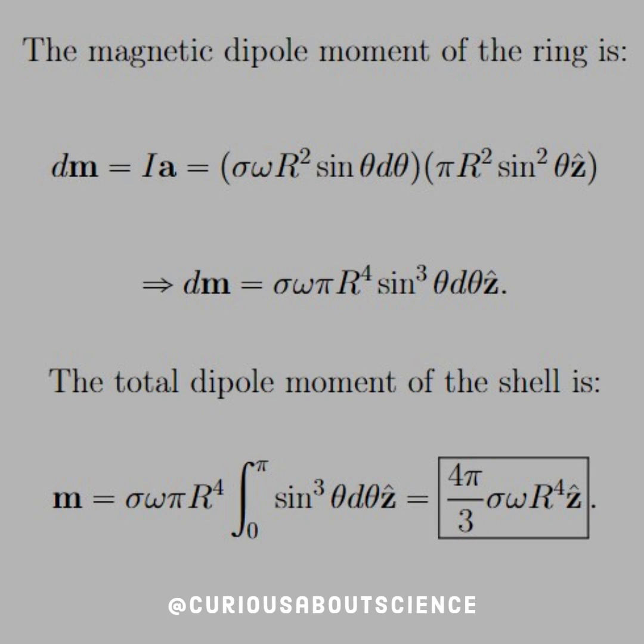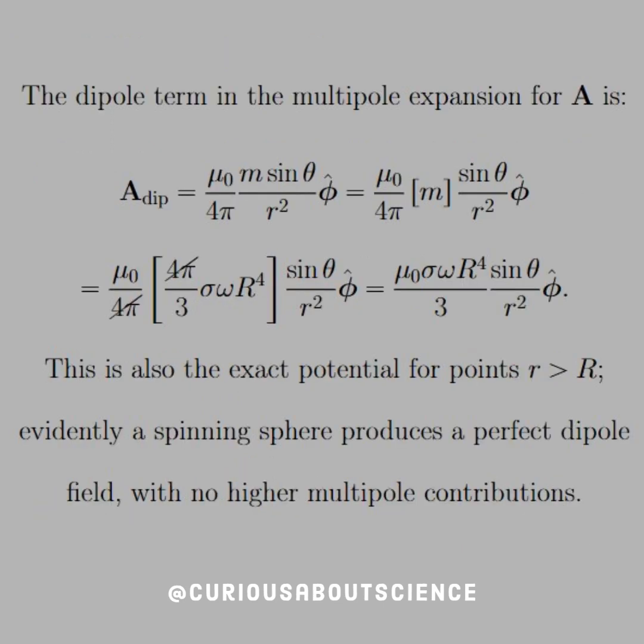So, integrate that out to find the total dipole moment of the shell, and we see that the integral from zero to pi, since that's the physical constraint on the shell, of sine cube theta d theta in the z hat direction yields four pi over three sigma omega r to the fourth z hat. Alright, that's pretty nice.